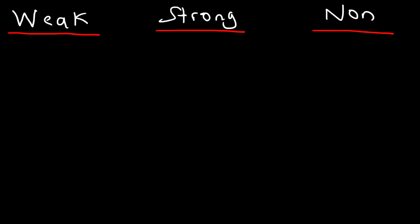Let's start with HCl, hydrochloric acid. Hydrochloric acid is a strong acid, so therefore it's a strong electrolyte. It ionizes completely and conducts electricity very well when placed in water.